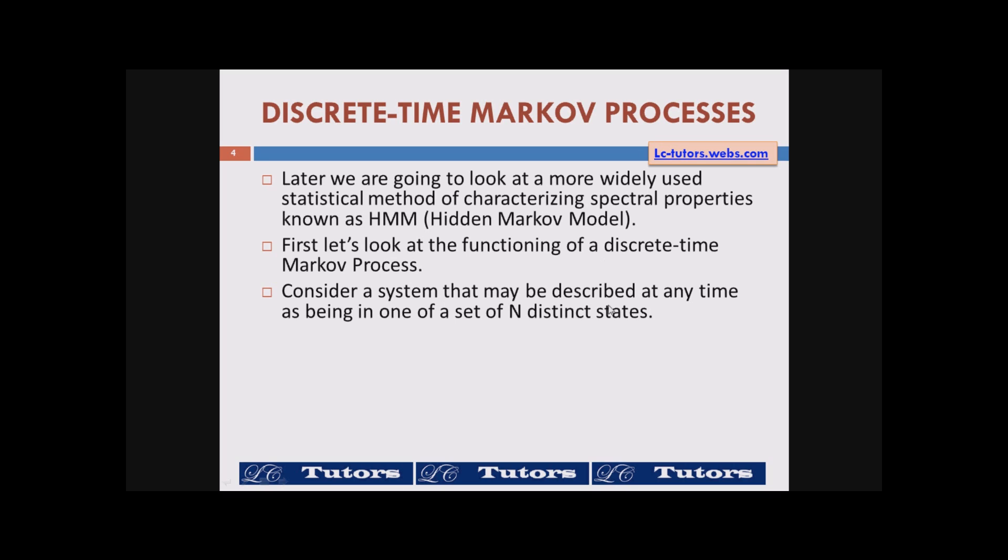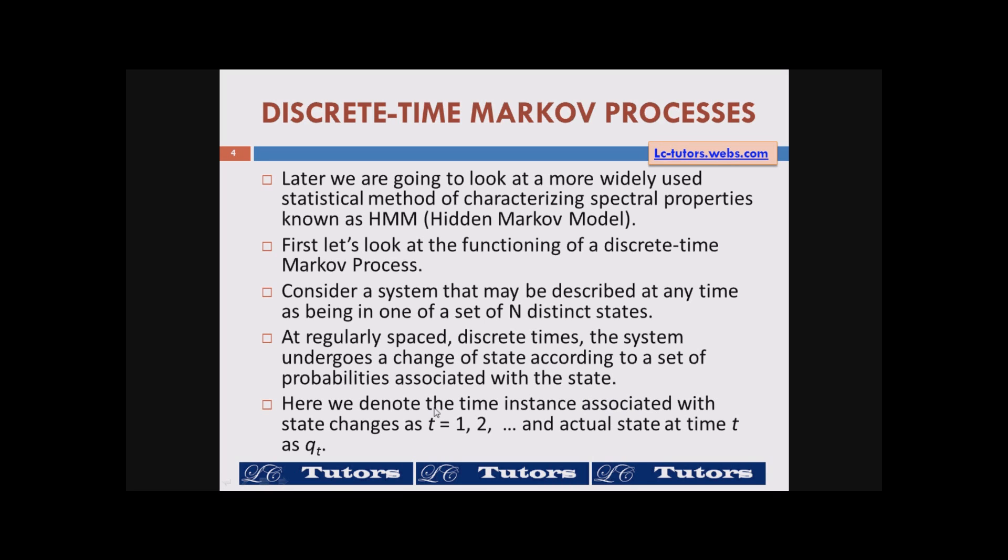Consider a system that may be described at any time as being in one of a set of capital N distinct states. At regularly spaced discrete times the system undergoes a change of state according to a set of probabilities associated with the state. Here we denote the time instance associated with that which states changes as t equal to 1, 2, so on and so forth and actual state at time t as qt. qt's are the states. There can be state q1, q2, q3 like that.